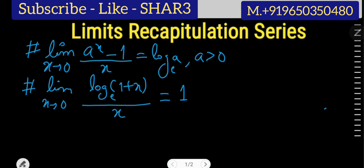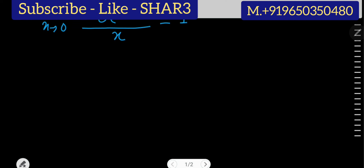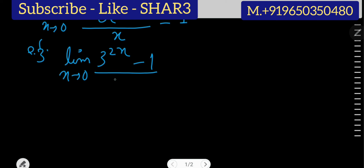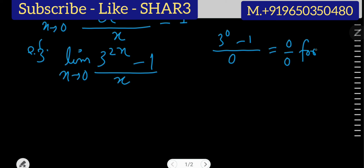Now we will take up some problems based on these two formulas. Suppose I begin with a very simple example: limit x approaches 0 of (3 to the power 2x minus 1) upon x. If you directly replace the value of the limit into the function, the denominator will be 0 and the numerator will be 3 to the power (2 times 0), that is 0, minus 1 — giving 0 upon 0 form.